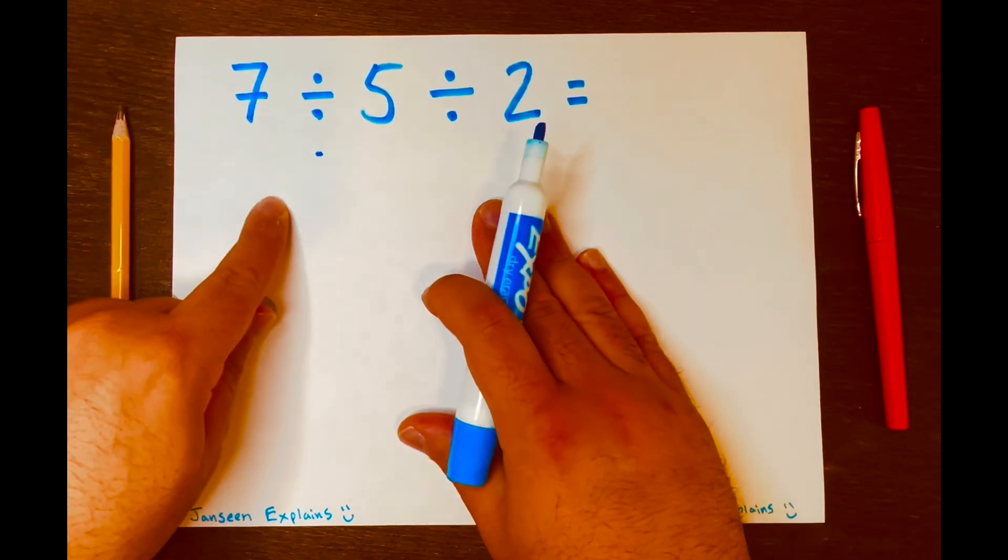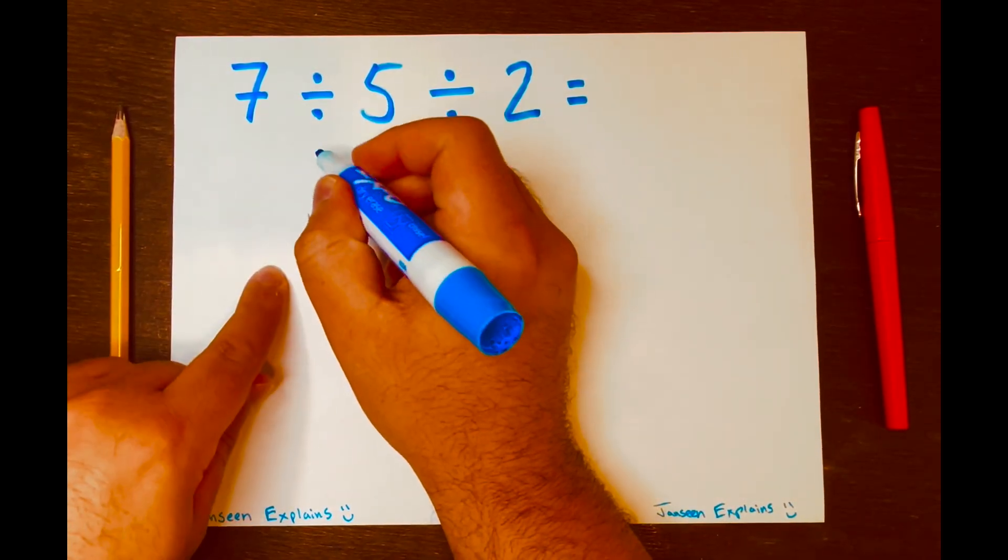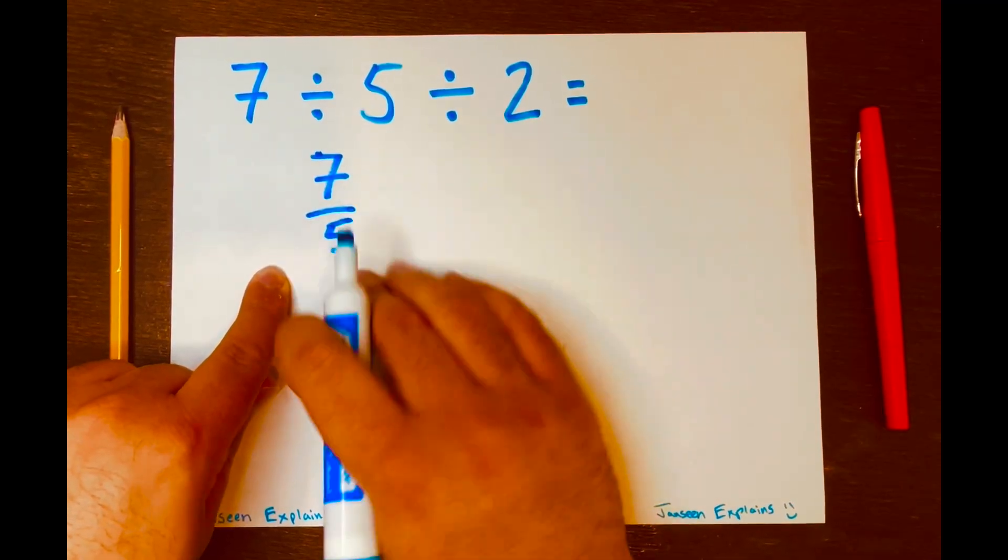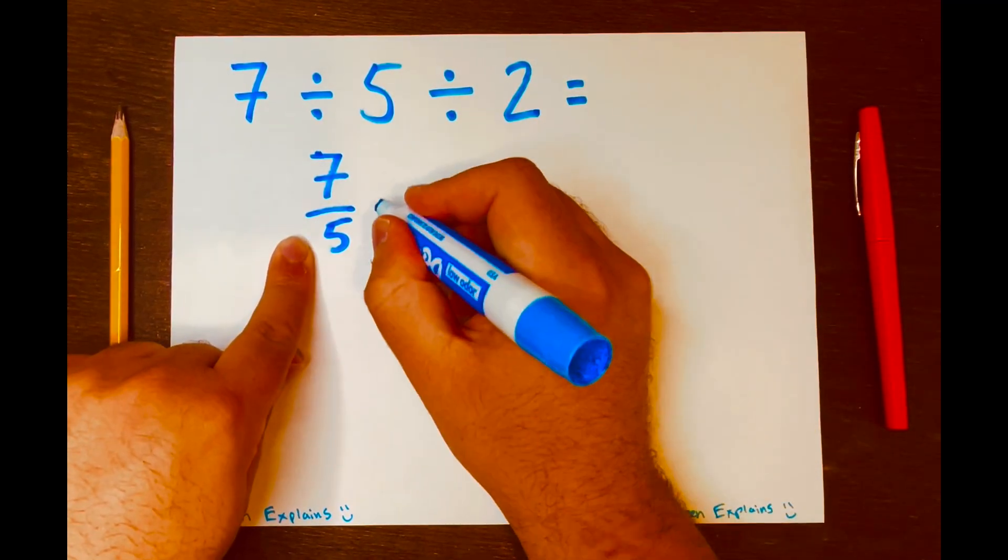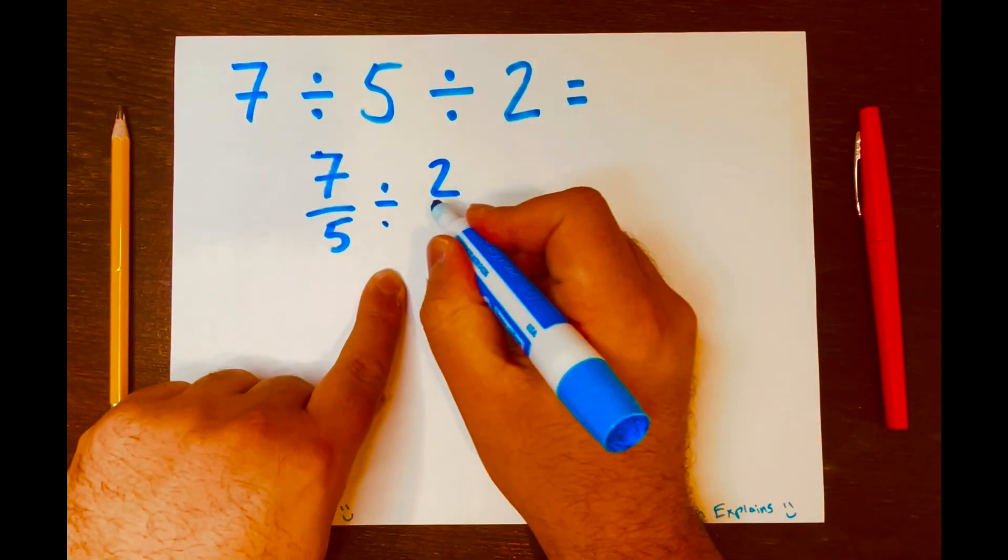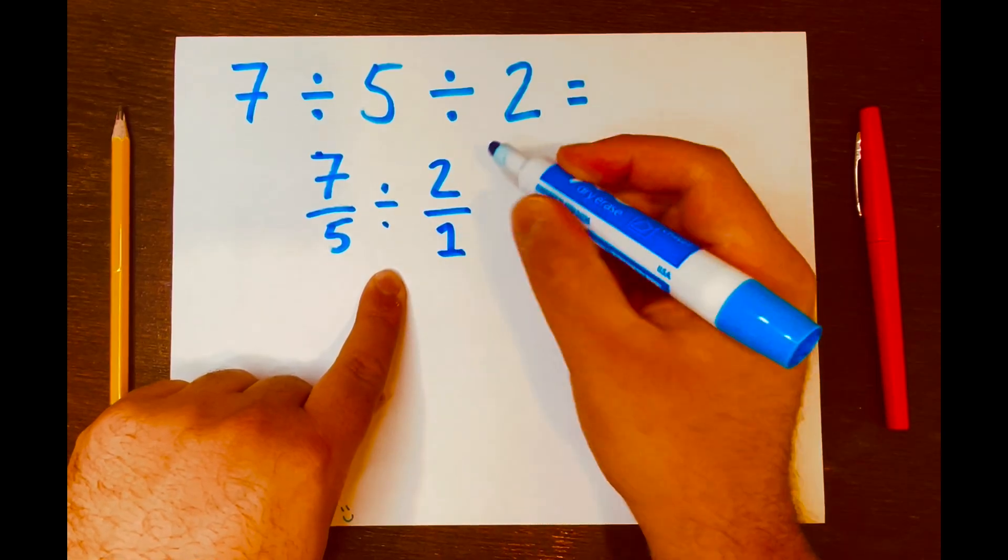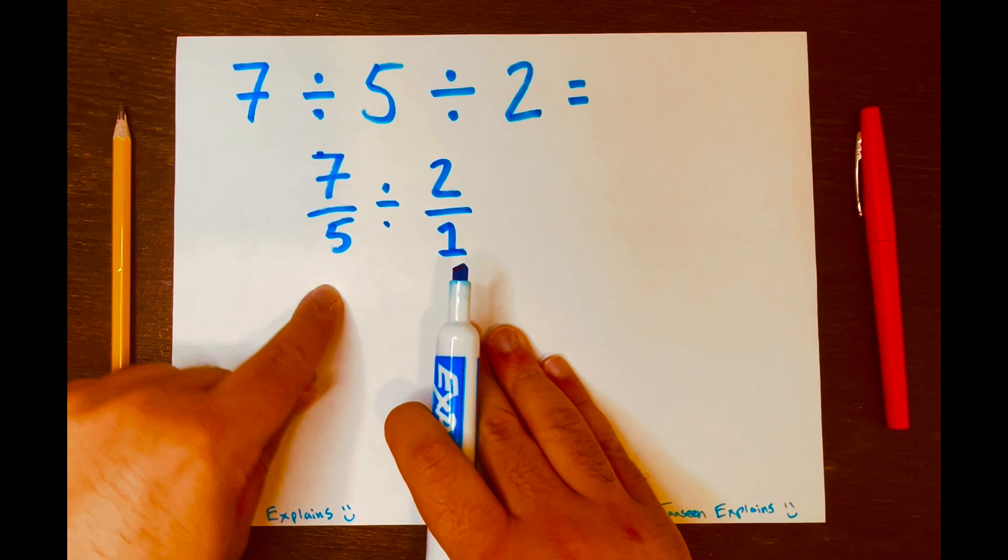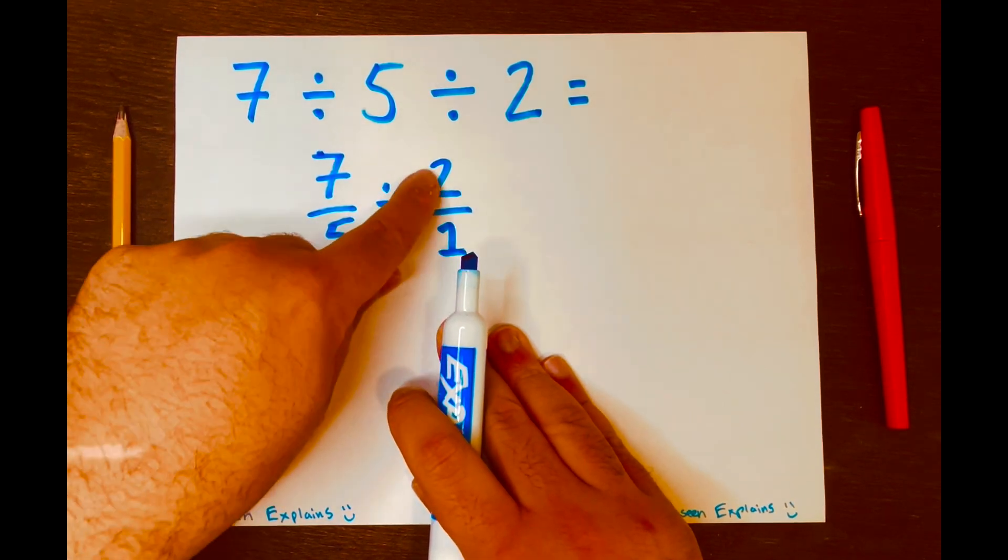7 divided by 5. I want to turn this into a fraction to make the math easy. 7 over 5. And then let's bring down the division symbol and then the 2. Also, I want to turn this 2 into a fraction to make the math easy as well, because we know 2 over 1 equals 2. It does not change the 2. Now we have 7 over 5 divided by 2 over 1.